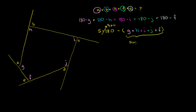The whole reason why this is interesting is that we've expressed what we need to figure out in terms of the sum of the interior angles. So it's going to be 900 minus the sum of the interior angles. It seems like we've made a little progress, at least if we can figure out the sum of the interior angles.